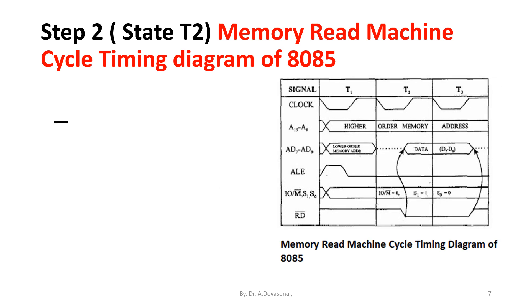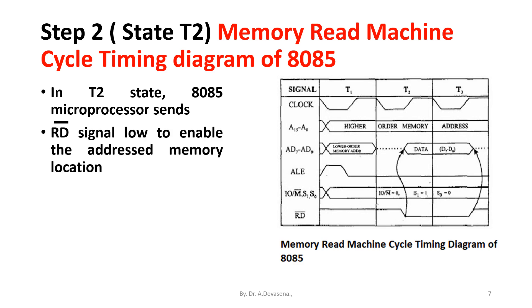In T2 state, the 8085 microprocessor sends the Read bar signal low to enable the addressed memory location. Here is the representation of the Read bar signal. The memory device then places the contents of the addressed memory location on the data bus, as represented here.